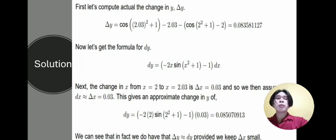we then assume dx = 0.03. This gives an approximate change in y of dy = [-2(2) sin(2² + 1) - 1](0.03) = 0.085070913.